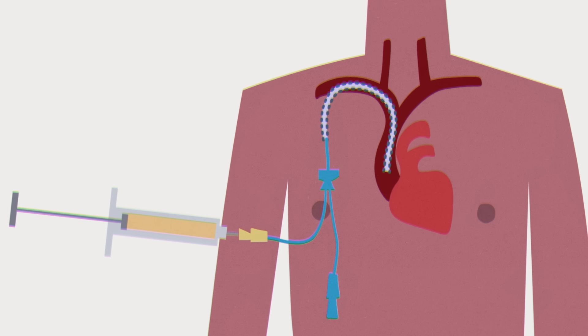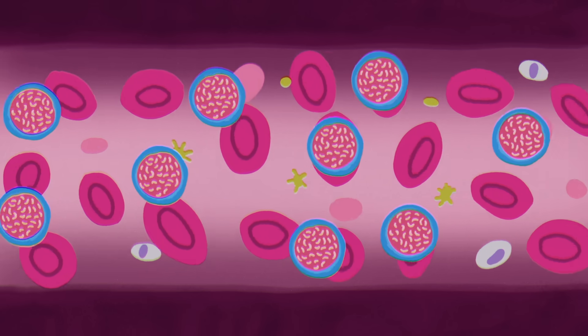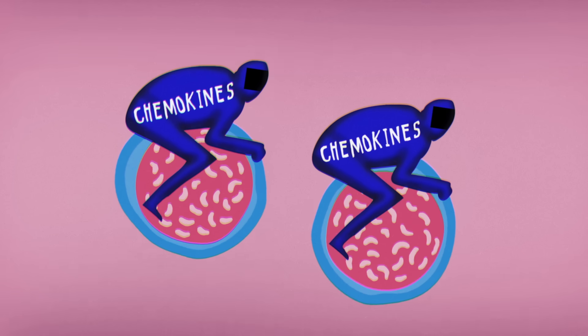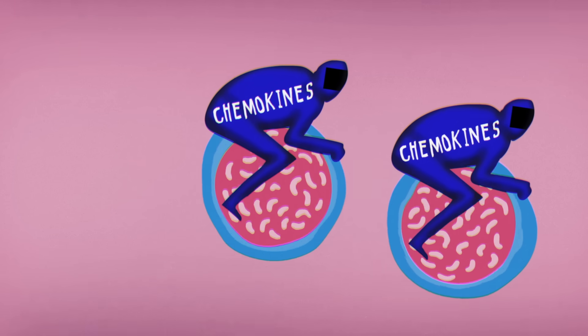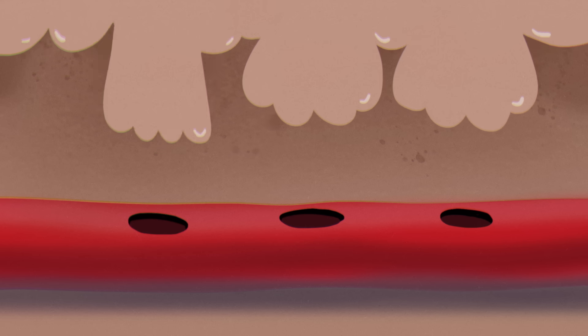Then the donor cells are infused into the patient's body through a central line. They initially circulate in the recipient's peripheral bloodstream, but molecules on the stem cells called chemokines act as homing devices and quickly traffic them back to the marrow. Over the course of a few weeks, they begin to multiply and start producing new, healthy blood cells.